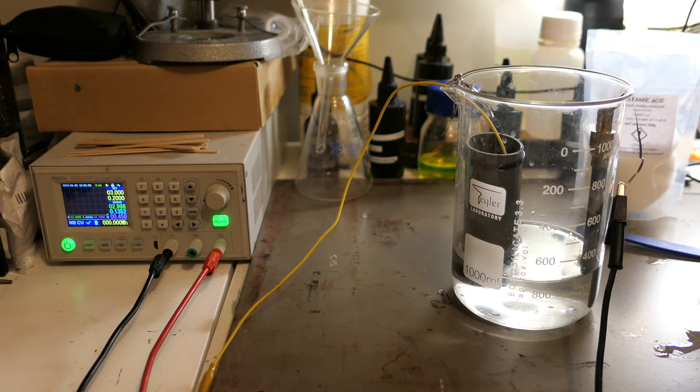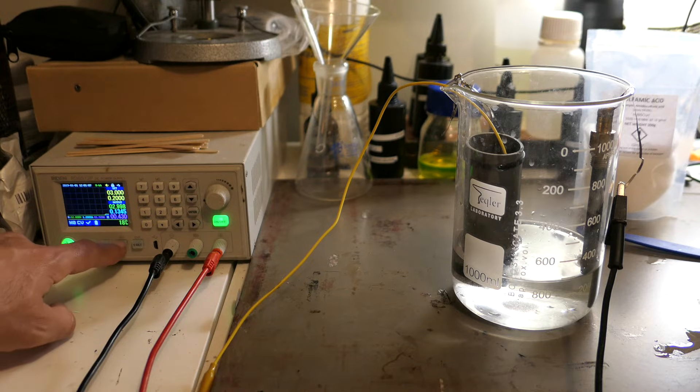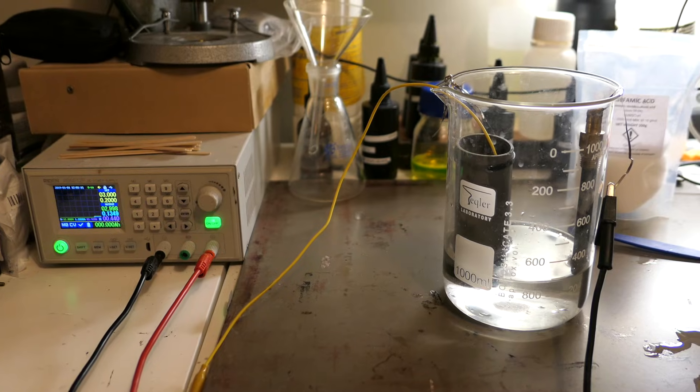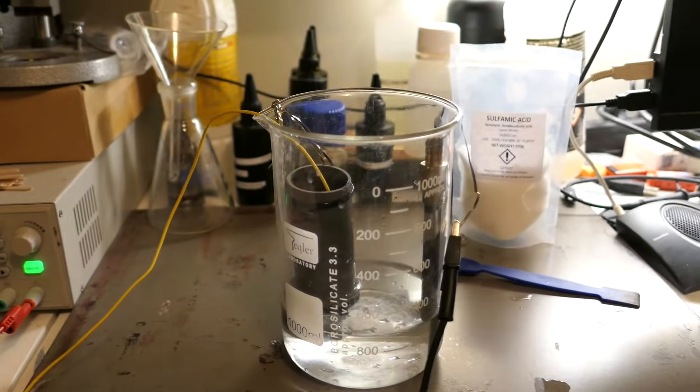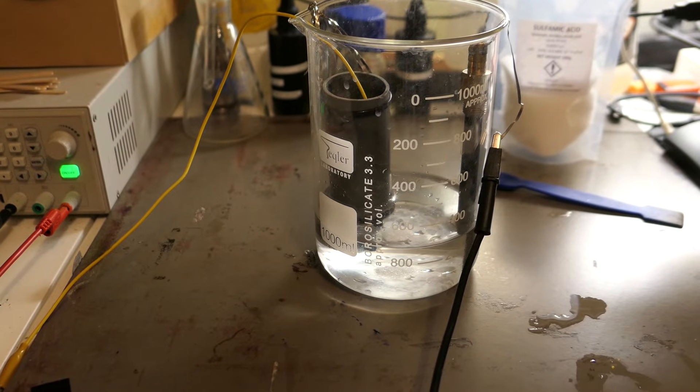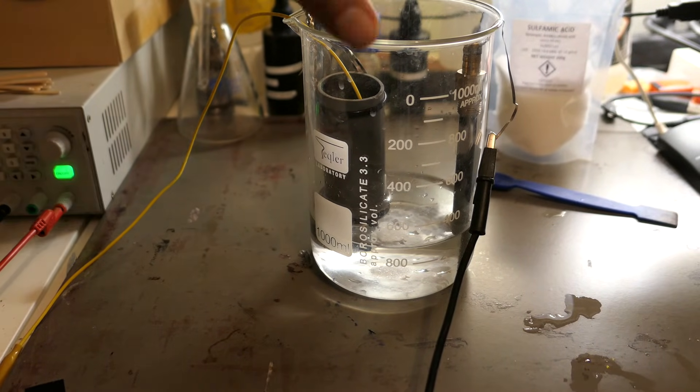Once everything is set up, we can start the electrolysis and then we'll let it run for several hours. Over time, we'll see silver start to deposit on the graphite cathode. At first, the silver deposit is pretty small, but as time goes on, it grows steadily.